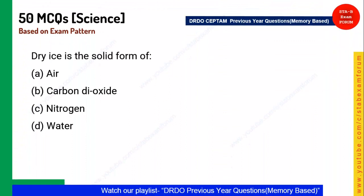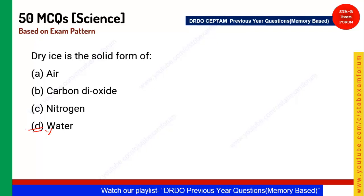Next question: Dry ice is the solid form of what? Don't be misled by the term 'dry ice' into choosing water — dry ice is actually solid carbon dioxide. It converts through a process called sublimation. Option B is the correct answer.